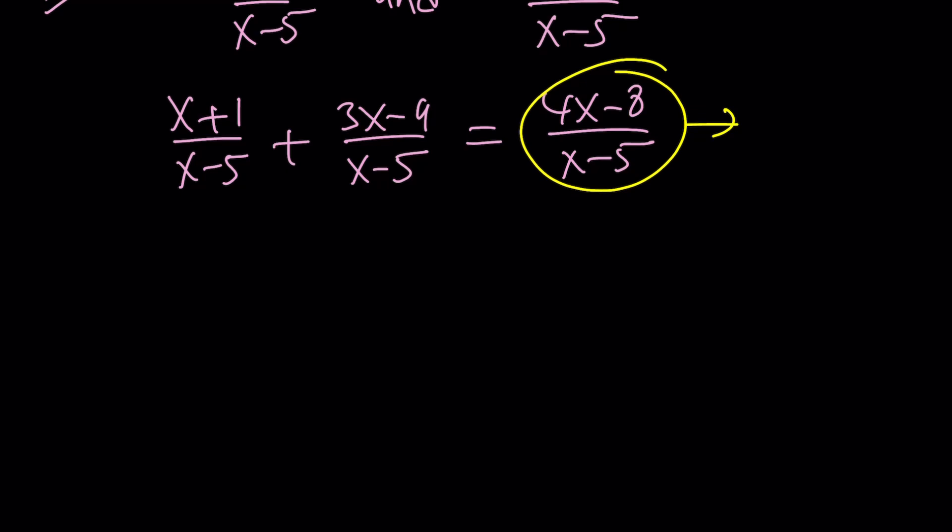My goal is the following. I want to take (x+1)/(x-5) and (3x-9)/(x-5). And then I want to multiply each one of these by some integers or rationals, so that this sum can be written as a constant, which is a multiple of (x-5)/(x-5). What is that supposed to mean?